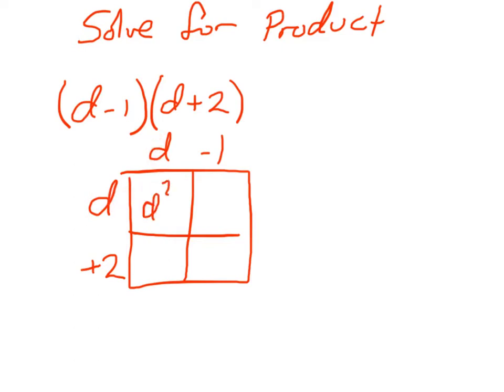So that's D squared. Then we're going to multiply these two parts to get them to come in, which would give me a negative 1D. Then we're going to multiply these parts to come up with this space, which would give me a 2D. And lastly, we're going to multiply these parts here to give me a negative 2.